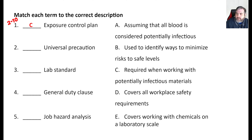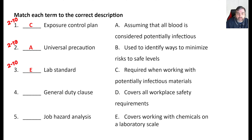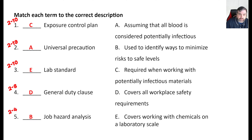Universal precaution is going to be A — assume that all blood is considered potentially infectious. It doesn't matter if the person is sick or not. You can find that on page 19. Lab standard has to deal with E, covers working with chemicals on a laboratory scale. And then general duty clause is D, covers all workplace safety requirements. That leaves B: job hazard analysis, used to identify ways to minimize the risks to safe levels.